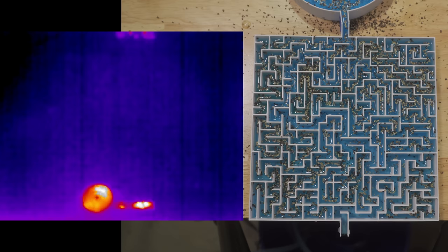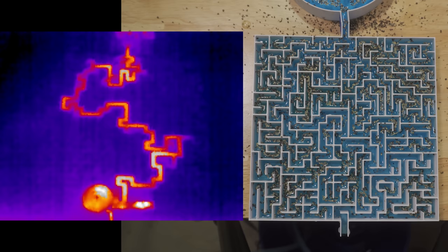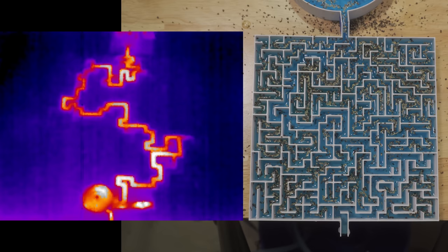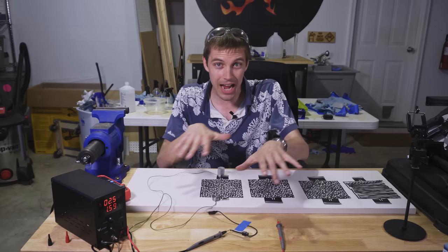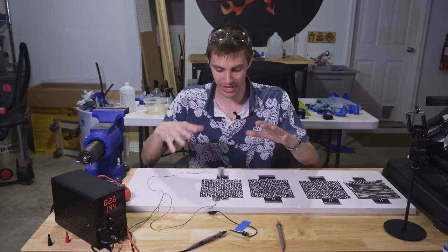And just like with the water model, this doesn't happen instantly. Although the water model took many seconds in order to find its steady state flow condition, the electrons in this circuit are doing the exact same thing. It's just a whole lot faster. They spend a solid few nanoseconds sloshing around, feeling out every conceivable way that they could solve the maze before they settle into that steady state flow.